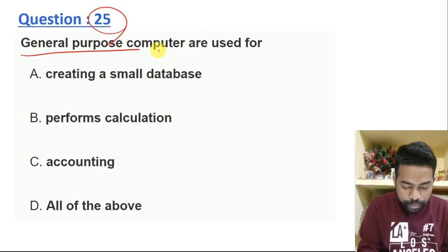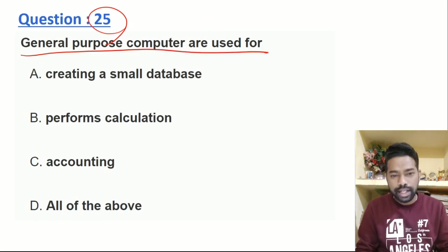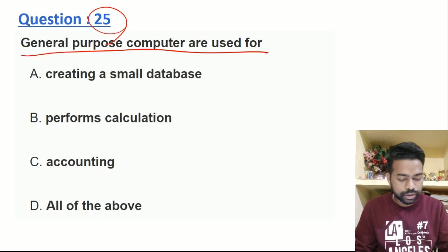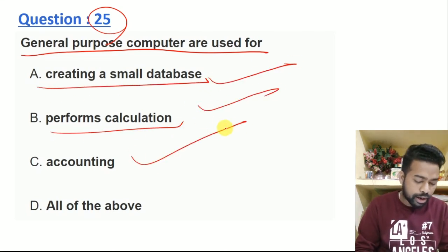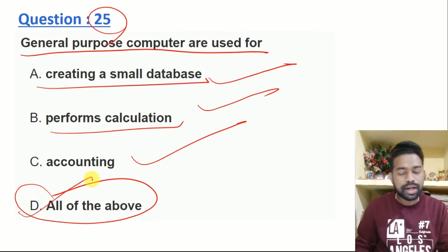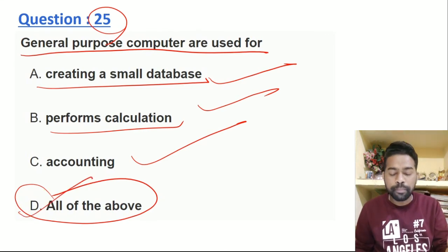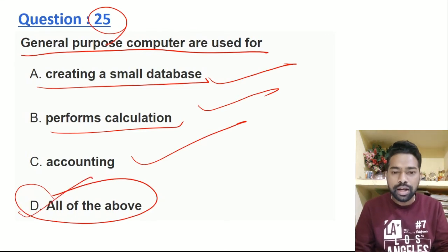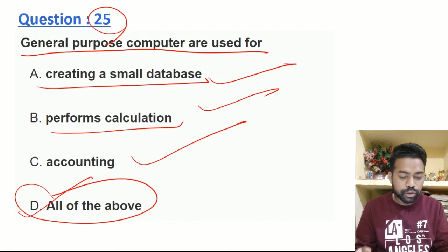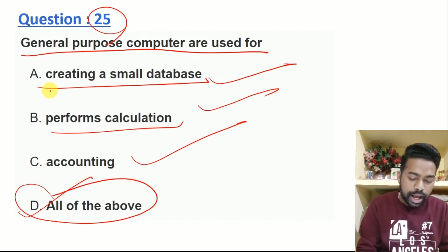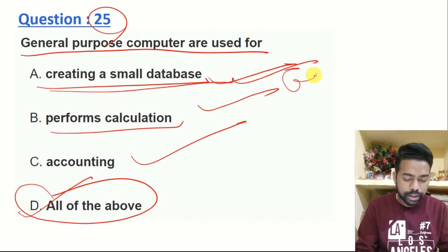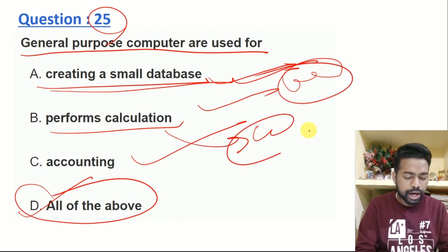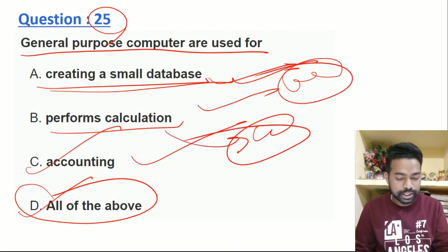What is the general purpose computer used for? Creating a small database, performing calculations, accounting — all of the above. Obviously, the general purpose computer means a normal computer — wherever the requirements are, all of the computer's functions are fulfilled. Data base, small database create, Excel use, calculation, accounting — all of these things are easy to do.